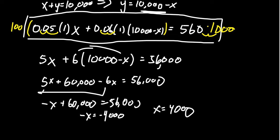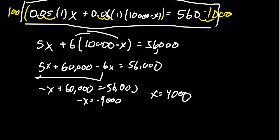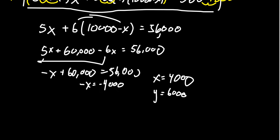This means that our individual invested 4,000 into the 5% account, which means that then they invested $6,000 into the other account. Remember 10,000 take away 4,000 is 6,000.